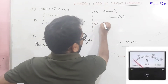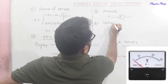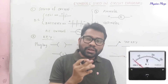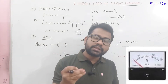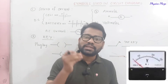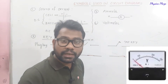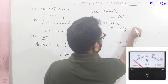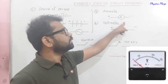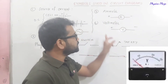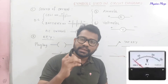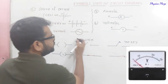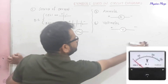The fourth component is the voltmeter. It is a device used to measure the potential difference across the terminals of any electric component connected in the circuit. It is always connected in parallel. For an ideal ammeter the resistance is zero, whereas for an ideal voltmeter the resistance is infinity.